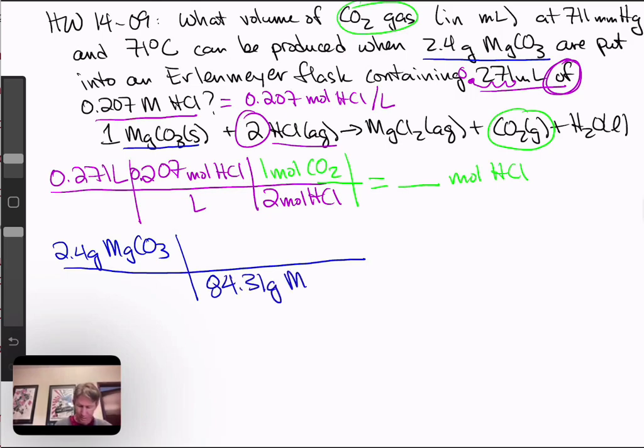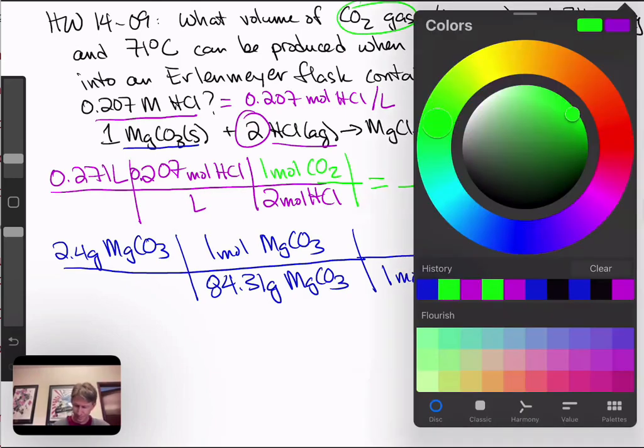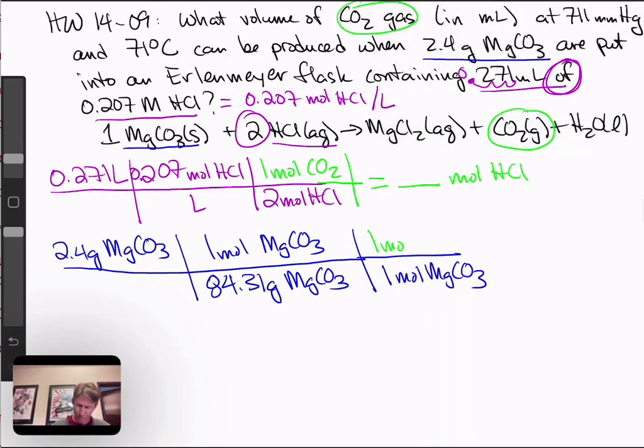Magnesium 24.30 plus carbon 12.01 plus 3 oxygens, 3 times 16, I get 84.31 grams magnesium carbonate per one mole. Now it's every one mole magnesium carbonate for one mole CO2.